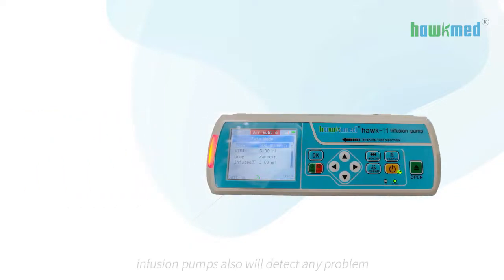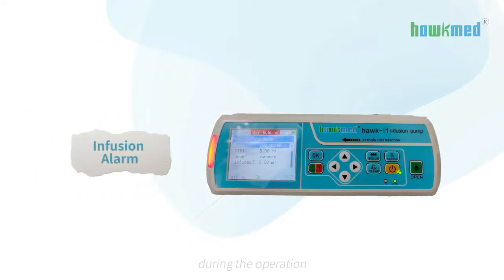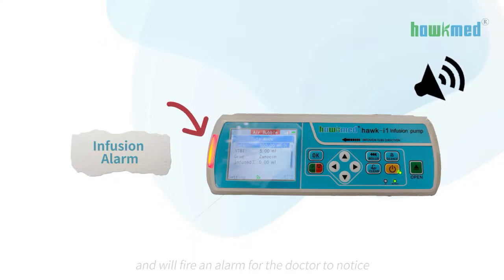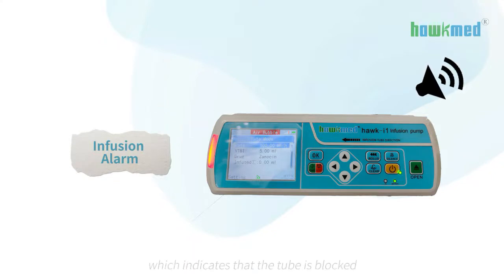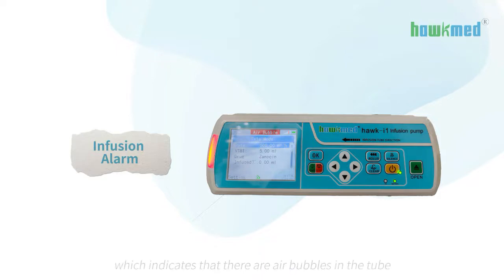Infusion pumps also will detect any problem during the operation and will fire an alarm for the doctor to notice, like the occlusion alarm which indicates that the tube is blocked, and the air in line alarm which indicates that there are air bubbles in the tube.